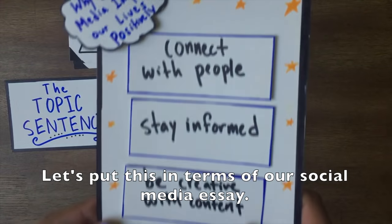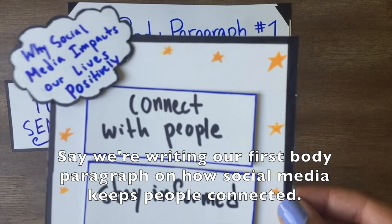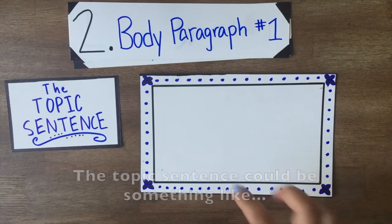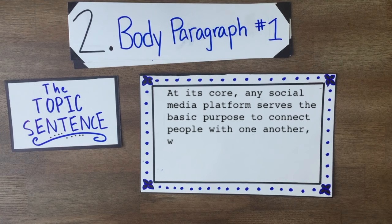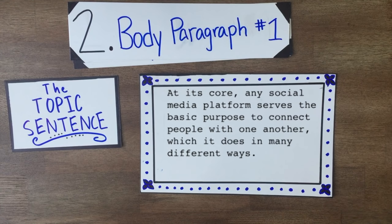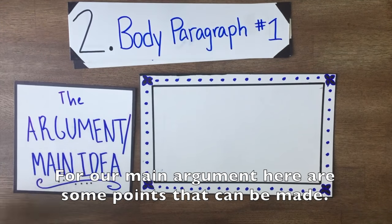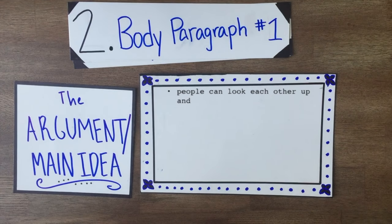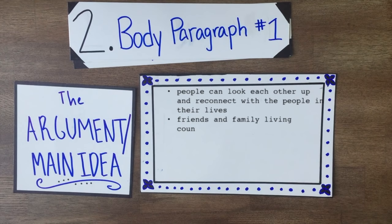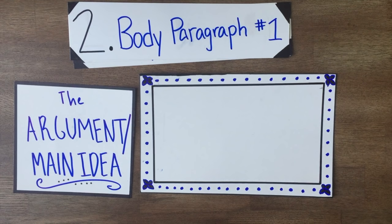Let's put this in terms of our social media essay. Say we're writing our first body paragraph on how social media keeps people connected. The topic sentence could be something like: at its core, any social media platform serves the basic purpose to connect people with one another, which it does in many different ways. For our main argument, here are some points that could be made: with social media, people can look each other up and reconnect with the people in their lives; friends and family living in countries apart can stay connected; and it can be used in times of crisis to check in with family and see if they are safe.